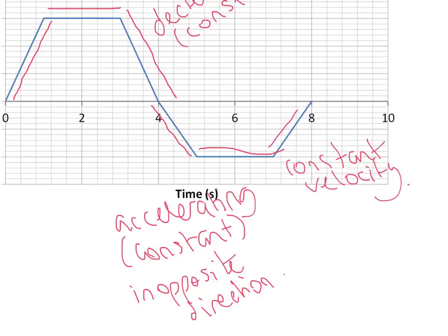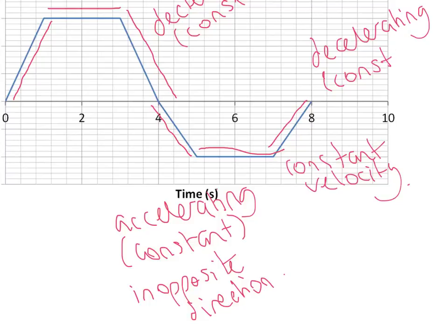Let's look at the final part of the graph on the far right-hand side. The key thing to notice is it's approaching the x-axis, so it must be decelerating because the magnitude of the velocity is getting smaller. It's a straight line graph with a constant gradient, so it's constant deceleration. And then this graph finishes up where it is at zero velocity, so it must therefore be stationary at that final point. And that is how to answer that question.